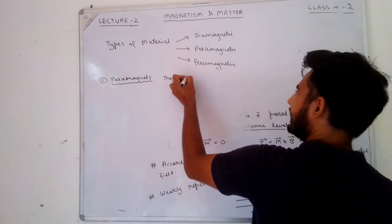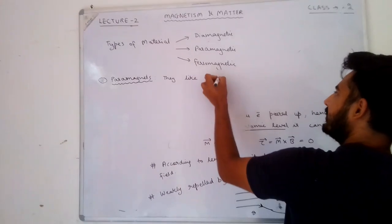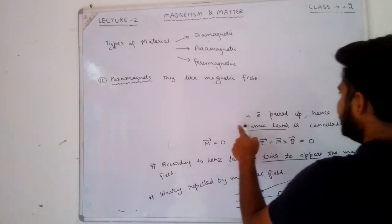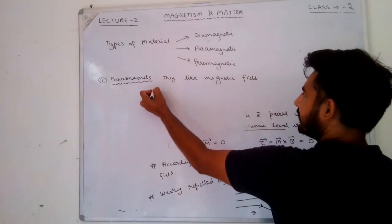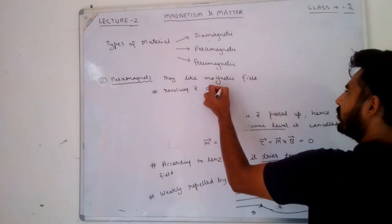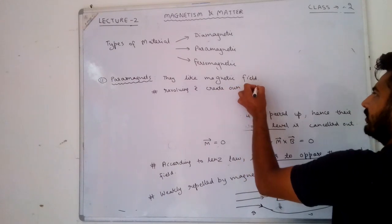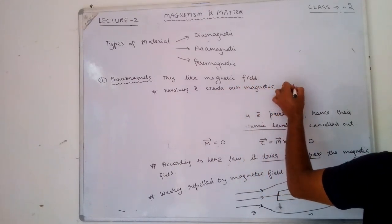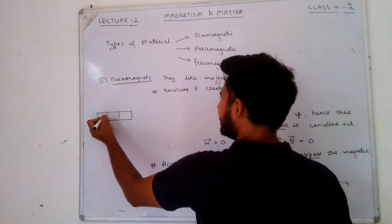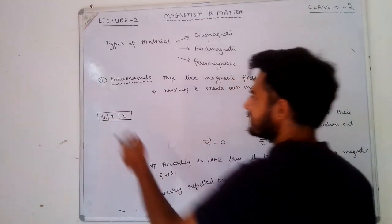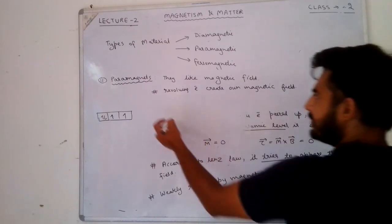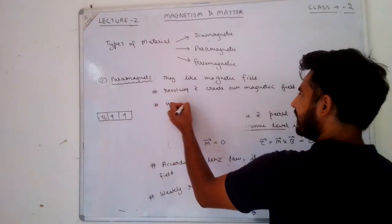Paramagnets like magnetic field. As we saw, revolving electrons create their own magnetic field. Paramagnets are materials which have unpaired electrons — for example, an atom with two unpaired electrons. Because of these unpaired electrons, their magnetic field at the atomic level is not zero.